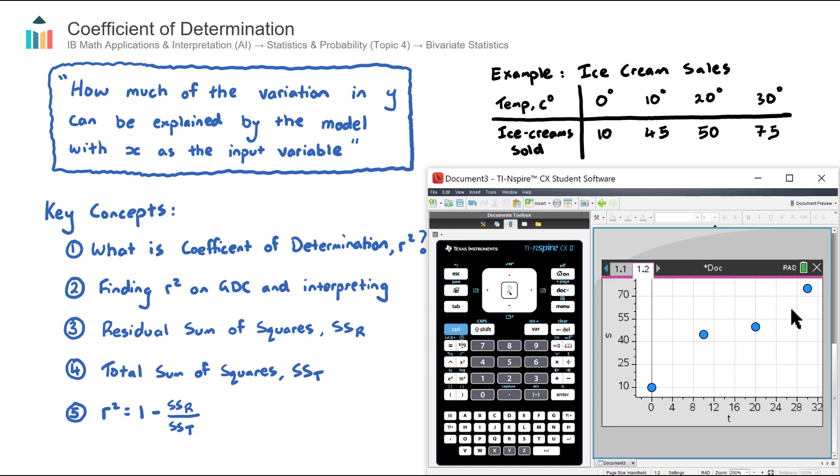The vertical axis S for ice cream sold. And we can see here that it follows a pretty good linear pattern. And with your knowledge of correlation, our two descriptors here would be positive. It's going from low left to high right, and also pretty strong, I would think.